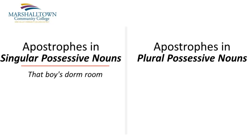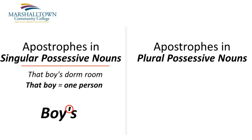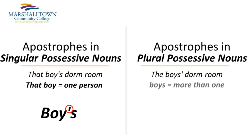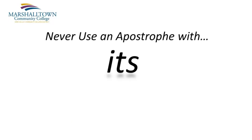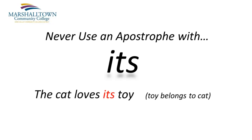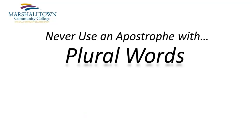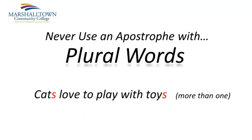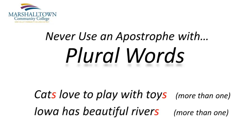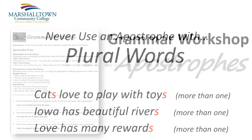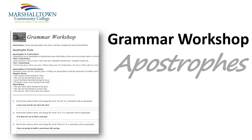For example, that boy's dorm room — to show that a dorm room belongs to a specific person, we place the apostrophe before the letter S. However, if we talk about a dorm room belonging to a group of people, we place the apostrophe after the letter S. One of the most common mistakes people make with apostrophes is to place them in words that should never have an apostrophe to begin with. Under no circumstances should you ever use an apostrophe with the word its. For example: the cat loves its toy, Iowa has its beauty, love has its rewards. Also, never use an apostrophe when you simply write plural versions of a word — for example: cats love to play with toys, Iowa has beautiful rivers, love has many rewards. The grammar worksheet for this week will give you a chance to practice when and where to use apostrophes in a sentence.